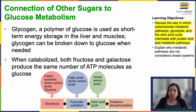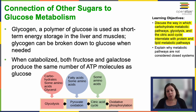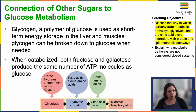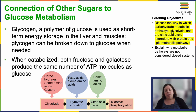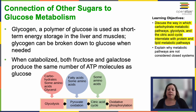Glycogen, which is composed of glucose units, serves as a short-term energy storage molecule in animals. Excess glucose gets converted to glycogen and stored mainly in the liver and around the muscles — you want glucose readily available to your muscles for quick ATP production. Glycogen is used whenever blood sugar levels decrease, providing a sustained source of glucose for ATP production during prolonged exercise, for example.